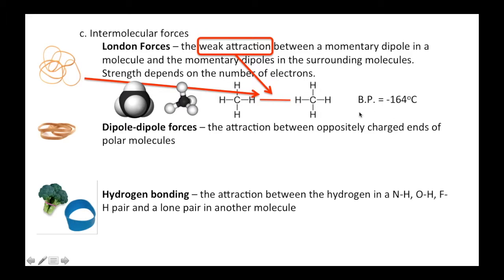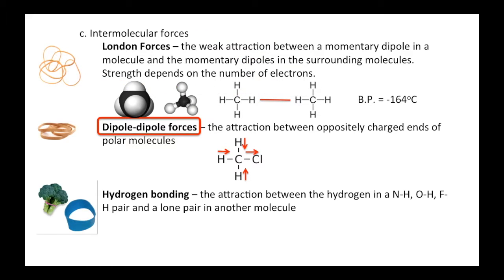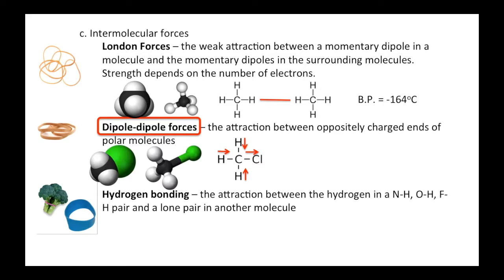Because it's not strong, the boiling points of these non-polar molecules are quite low — negative 164 degrees Celsius for methane. If you added more carbons and hydrogens, the boiling point would go up a little. Now, dipole forces: if we compare methane to CH3Cl, instead of hydrogen on one side we have chlorine. Chlorine has 17 electrons versus hydrogen's one, and a stronger electronegativity, so it pulls electrons toward itself.